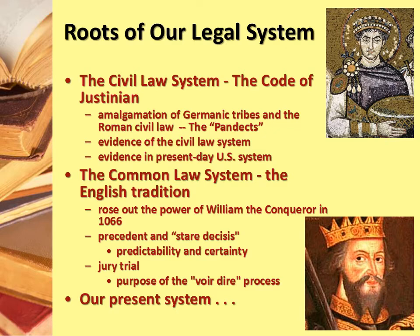Let's first talk about one of our roots: the civil law system. The civil law system grew out of the Code of Justinian — and there's Justinian to the upper right. He was considered a great lawgiver emperor, though the history of many Roman emperors left much to be desired. Remember, Nero was also an emperor. But what was the Code of Justinian?